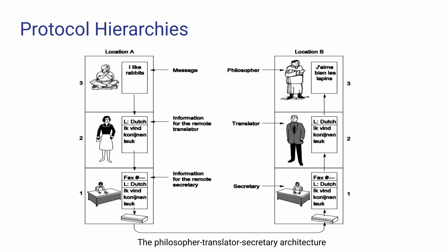As an example, consider a philosopher-translator analogy. A philosopher communicates via a remote translator who converts the facts. The translation and transfer happen through secretaries. Each message is converted by the translator into the respective language — for example, French. The secretaries handle the translation to the philosophers, and hierarchy is maintained. The physical media and the message travel through this structure.